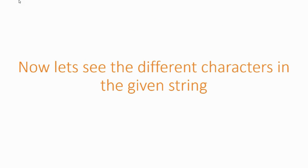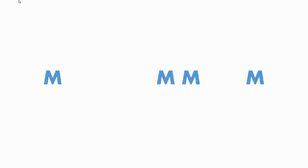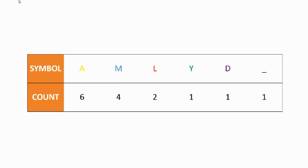Now let's look at the different characters in the given string. The character A appears six times, the character M appears four times, the character L appears two times, the character SPACE appears only once, the character Y appears only once, and finally the character D appears once as well.